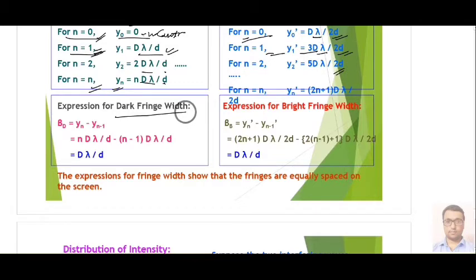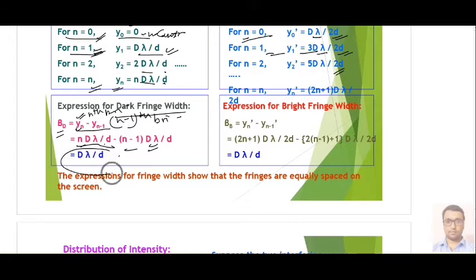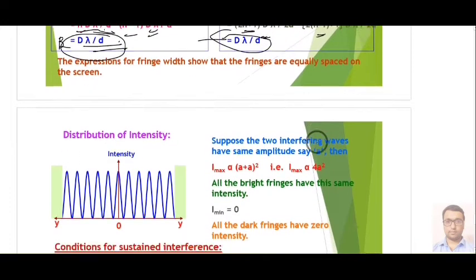For the fringe width, we calculate the distance of the nth bright fringe Yₙ = nDλ/d and subtract the (n−1)th bright fringe distance, which is (n−1)Dλ/d. Solving gives fringe width β = Dλ/d. For dark fringes the same formula applies, giving β = Dλ/d.